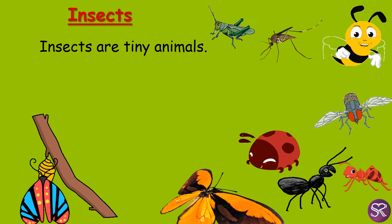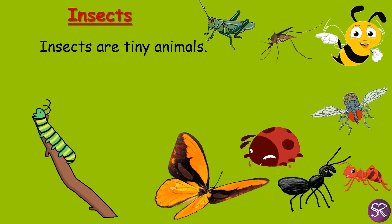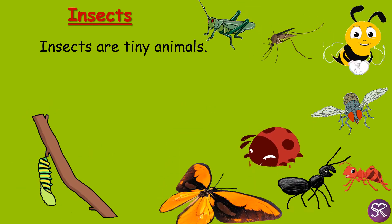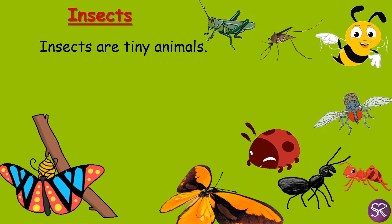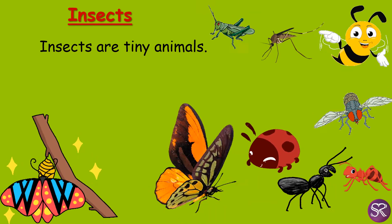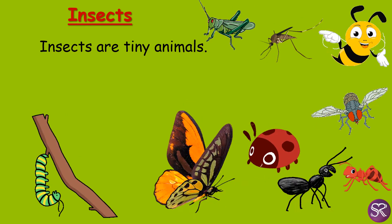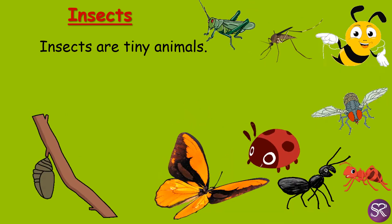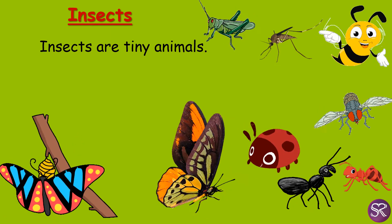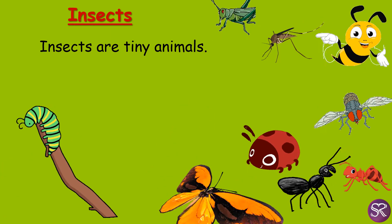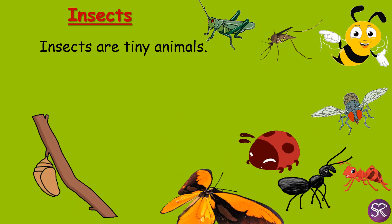Insects are tiny animals. Where can you find them? You can see them at your home, in the garden. Can you name some tiny animals like grasshopper, butterfly, ladybird, housefly? Yes, these are all called insects.